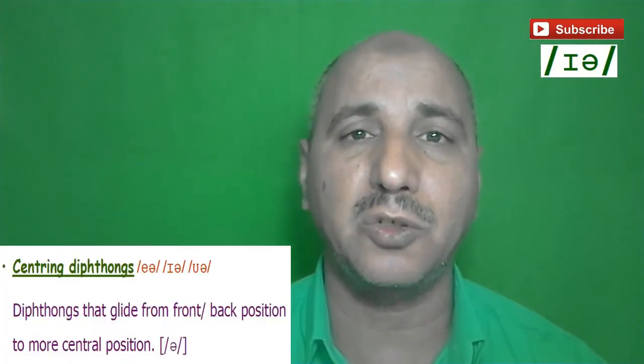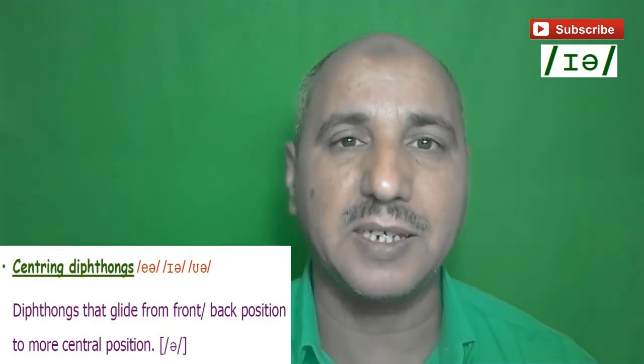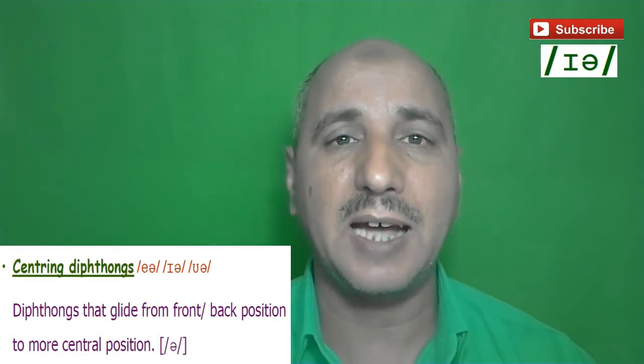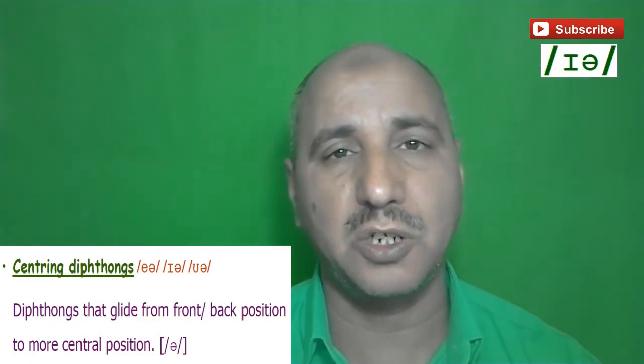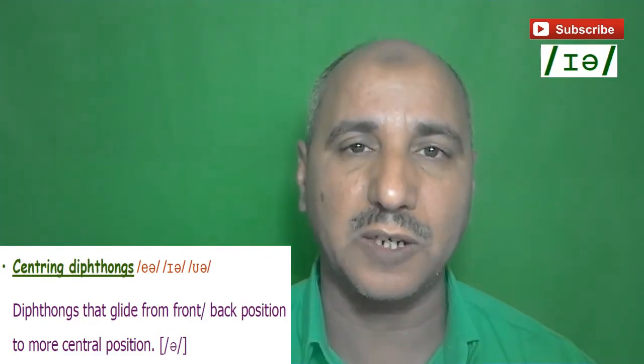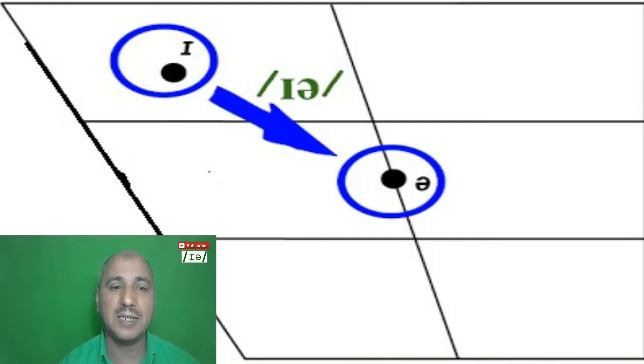If we talk about this sound, we have two different sections. The first section is about how to produce this sound, and the second section is about the common spellings — the letters that make this sound. This sound is called a centering diphthong. We have three different sounds belonging to this category: /ɪə/, /eə/, and /ʊə/. Diphthongs that glide from a front position to a more central position are called centering diphthongs.